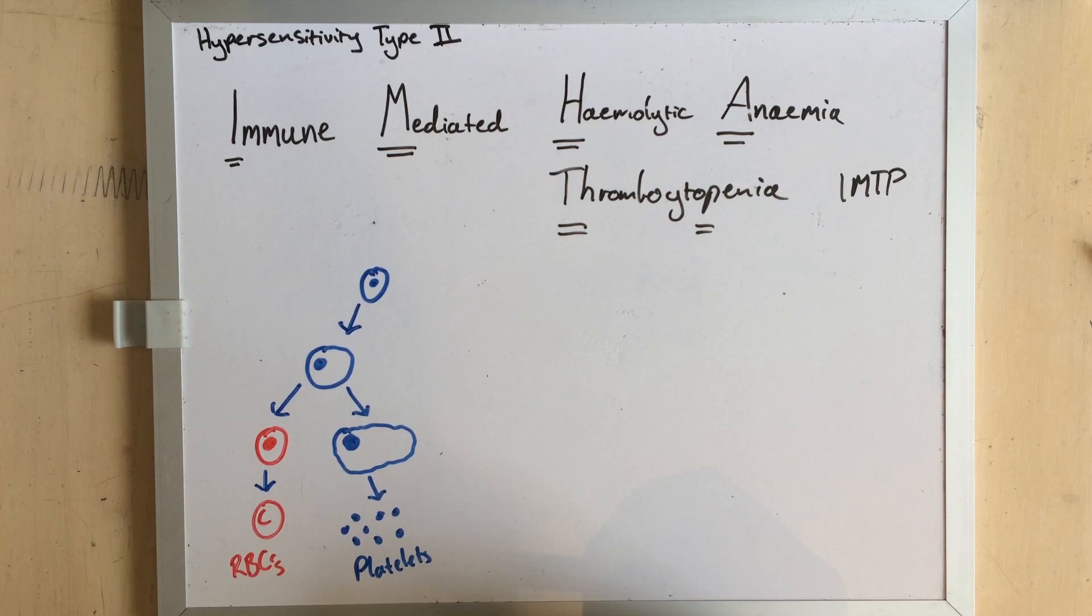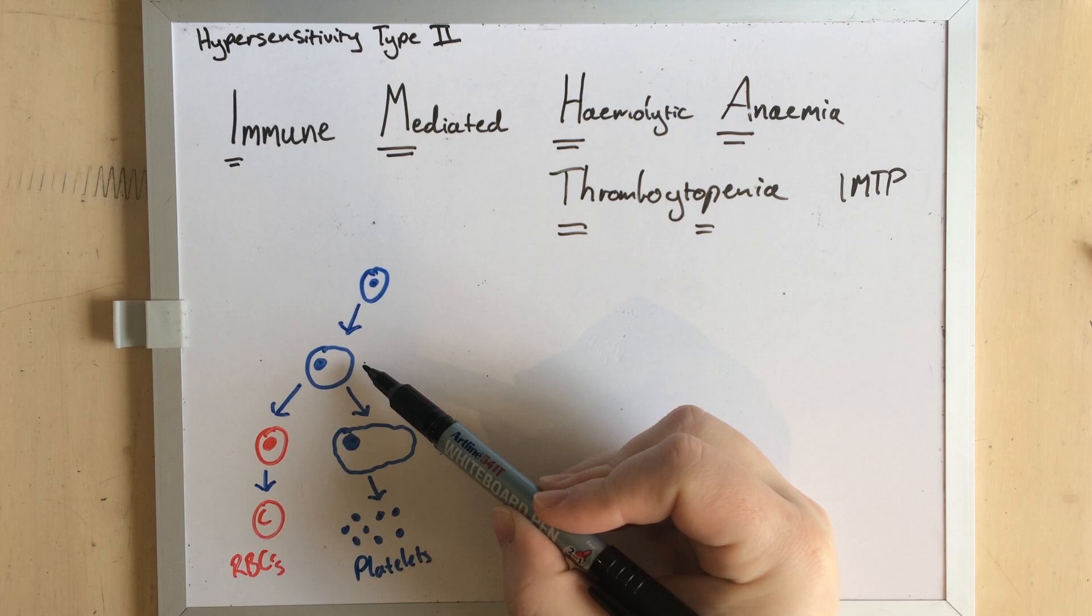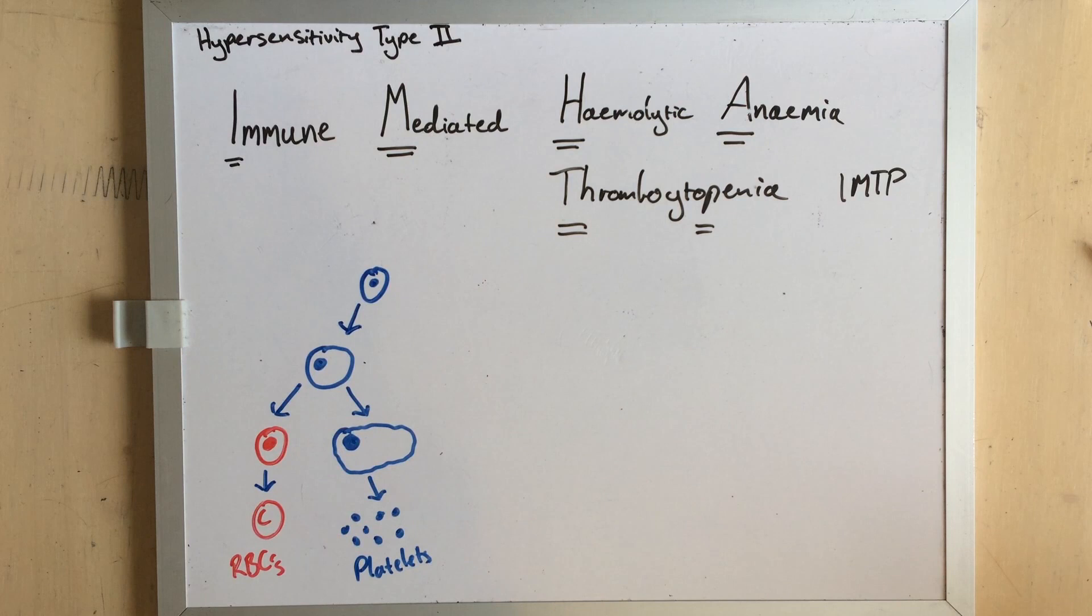You can also get immune-mediated destruction of the precursor cells and the stem cells earlier in that cell development line, which is a much more severe condition. IMHA affecting red blood stem cells may not appear regenerative at all and may only be diagnosed with a bone marrow biopsy, because these precursors aren't even reaching the bloodstream.